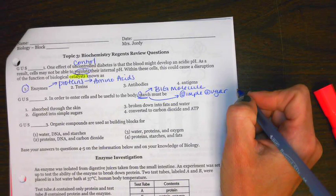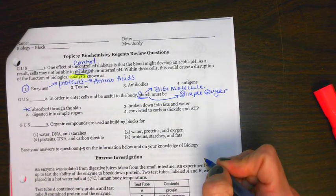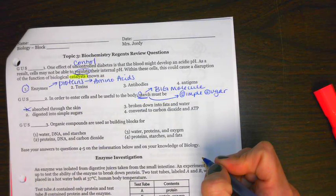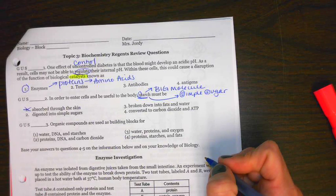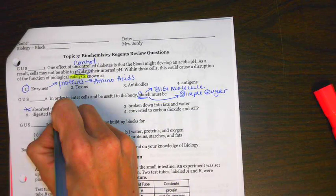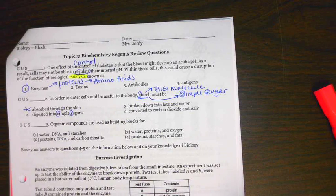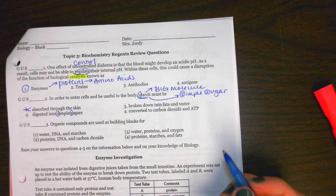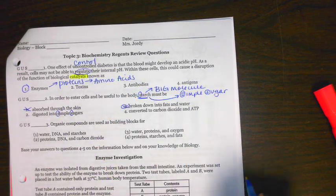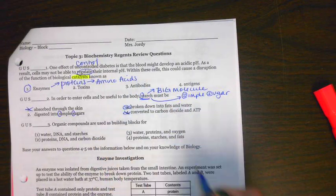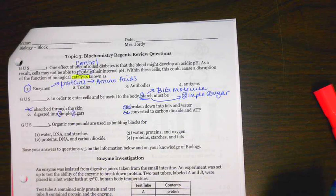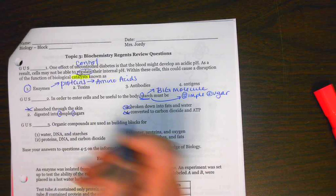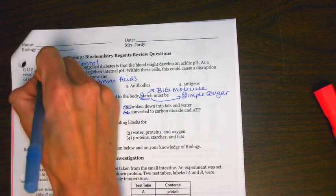Looking at those answer choices, one says absorb through the skin. No, starch is something you're going to eat, like a potato. Number 2 says digested into simple sugars. That probably is correct. Digested means broken down. Number 3 says broken down into fats and water. No, fats are not the building blocks of starch. Or converted into carbon dioxide and ATP. No, starch first is broken down into glucose, and then glucose through cellular respiration will be converted into carbon dioxide and ATP. So the best answer choice is 2.